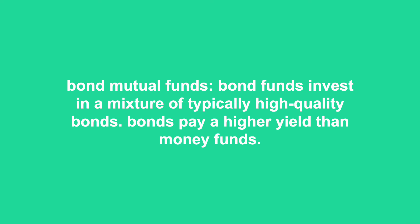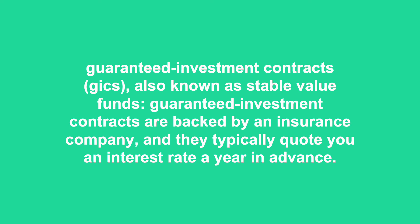Guaranteed Investment Contracts, GICs, also known as stable value funds, are backed by an insurance company and typically quote you an interest rate a year in advance. The attraction is that your account value doesn't fluctuate — at least not visibly. In GICs, you pay for the peace of mind of a guaranteed return with lower-than-bond-fund long-term returns. GICs have another minor drawback: insurance companies, unlike mutual funds, can and do fail, putting GIC investment dollars at risk. Some retirement plans have been burned by insurer failures.